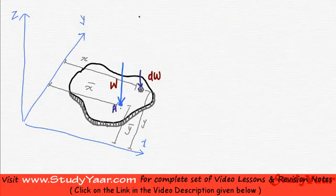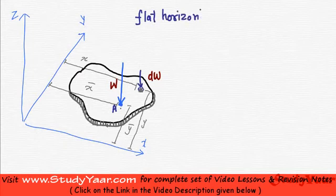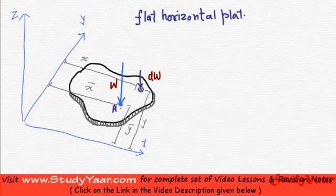Let's analyze a flat horizontal plate and try to determine its center of gravity. This is a flat horizontal plate. So over here I have a small element of this plate. We are going to assume that the weight of this element is dw, and the weight of this plate is w.